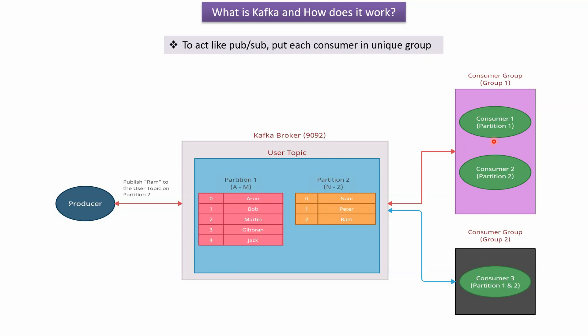Because of multiple consumers in the same group, messages can be consumed and processed in parallel, which improves performance. In Apache Kafka, the same partition can be consumed by different consumers in different consumer groups — that is allowed and it is fine.